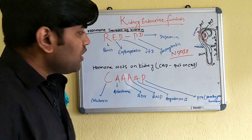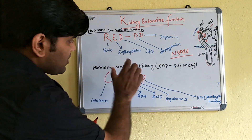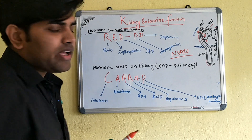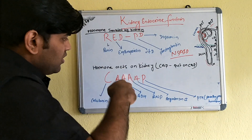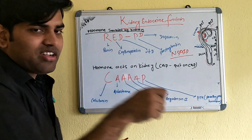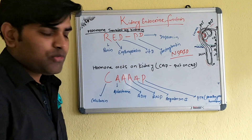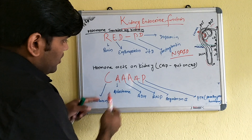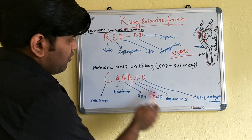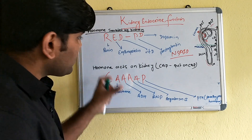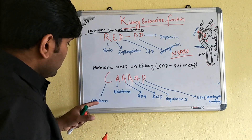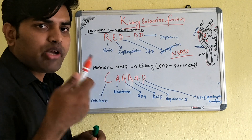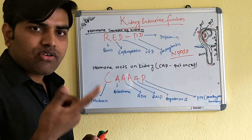Those are the hormones secreted by the kidney with their functions. Now, for the hormones that act on the kidney, remember the mnemonic 'CAP' — as if a cap is put on the kidney. C stands for calcitonin, A for aldosterone, A for ADH, A for ANP, and P for parathormone. Calcitonin does not have much action on the kidney.